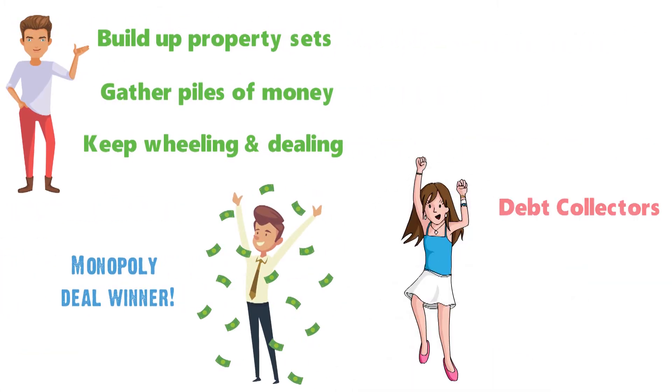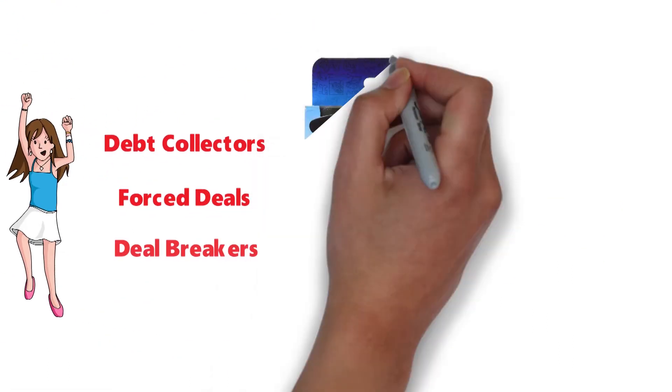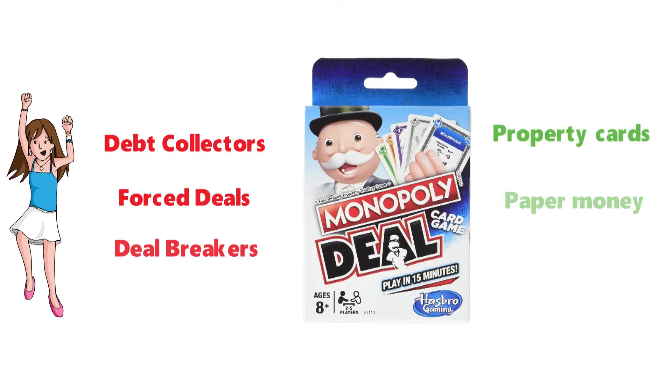For added excitement, there are debt collectors, forced deals, and deal breakers. The package contains property cards, paper money, and task cards.